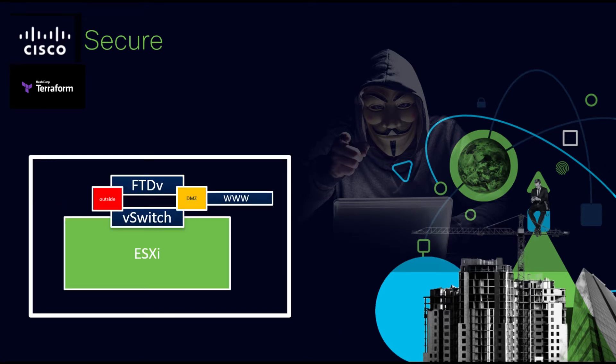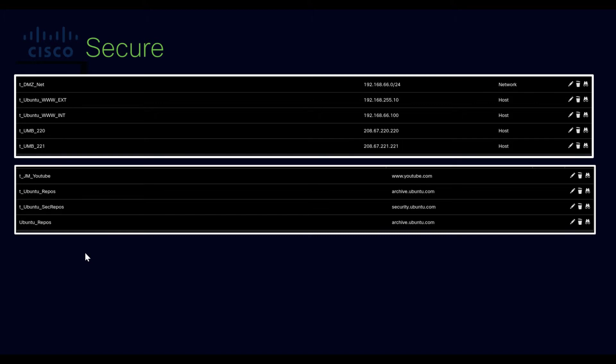We've got a virtual instance of Firepower currently deployed, and we're going to dynamically create a web server on the fly — everything from start to finish. We'll apply the right port groups, configure it with a web service running, pull some data down, SSH enabled, all through Firepower. Then we'll move on to create the objects we need for policy to access the web or SSH.